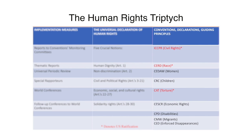On the right panel, in brief, are conventions which have the status of international treaty, such as the rights of the child, the Convention to Eradicate Racial Discrimination, the Convention to Eliminate Discrimination Against Women, and the Convention on the Rights of People with Disabilities. On the left panel are implementation measures such as reports of special rapporteurs, reports to United Nations monitoring committees, and world conferences.